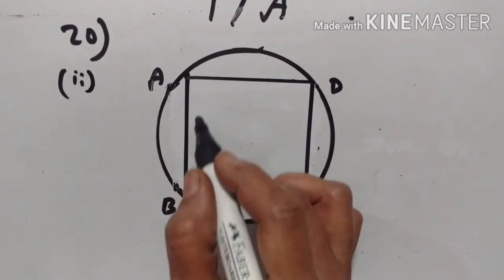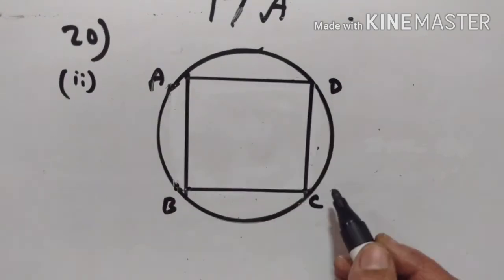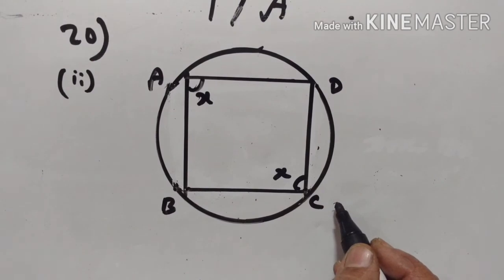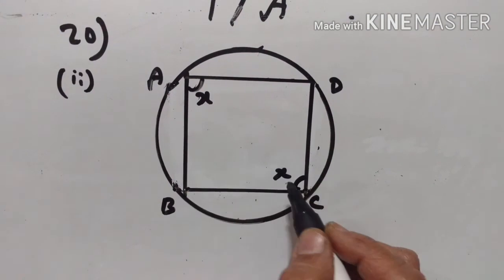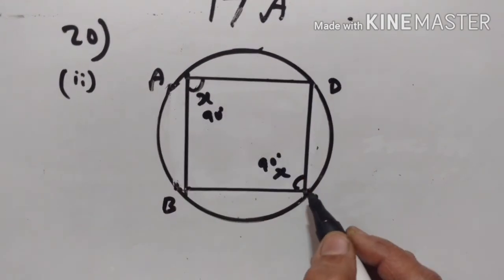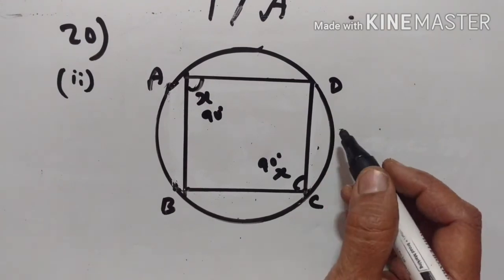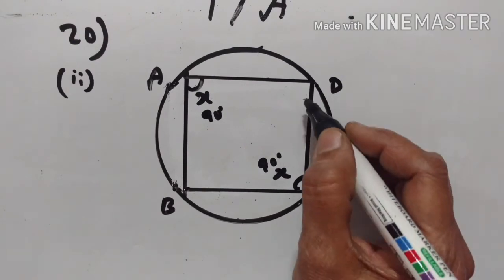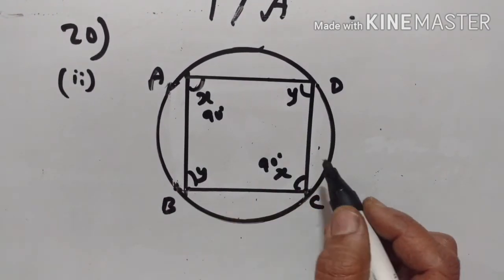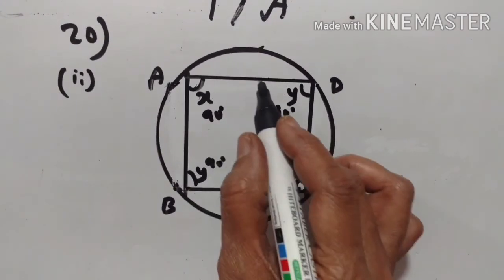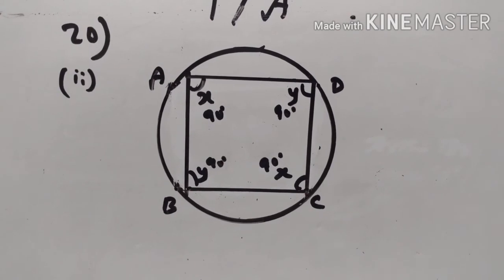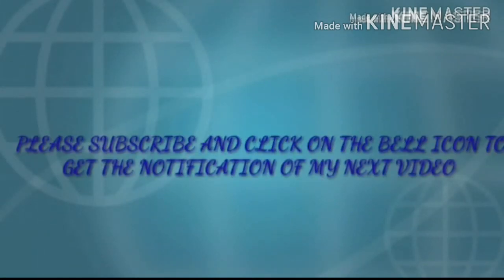Next, we prove that a rhombus inscribed in a circle is a square. ABCD is a rhombus, so opposite angles are equal. Let angle A equal angle C equal X. Since ABCD is a cyclic quadrilateral, 2X equals 180, so X equals 90 degrees. Similarly, letting the other pair of opposite angles be Y and Y, 2Y equals 180, so Y equals 90 degrees. In a rhombus all sides are equal, and we have proved all angles are 90 degrees each, so this is a square.